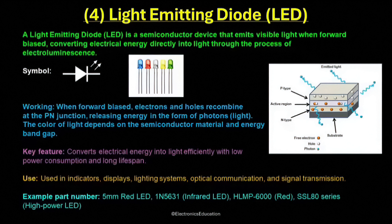In summary, the light-emitting diode is one of the most efficient and versatile electronic components ever developed. It converts electrical energy into light with high efficiency and low power consumption, operates instantly, and offers exceptional reliability. Its principle of operation based on electron-hole recombination makes it a fundamental part of modern electronics, revolutionizing display and lighting technology across the world.